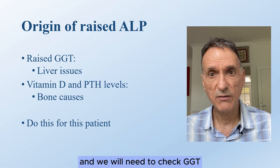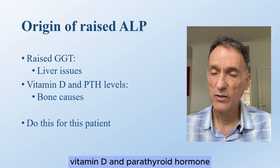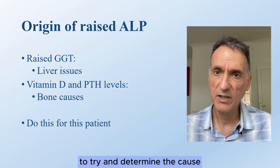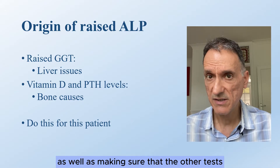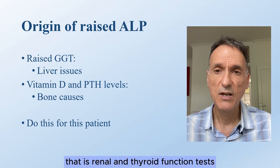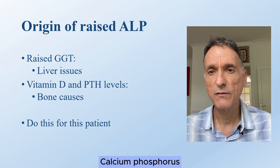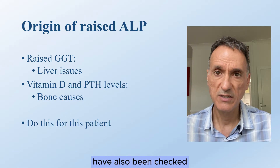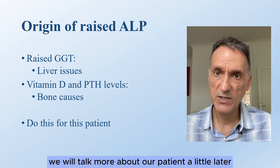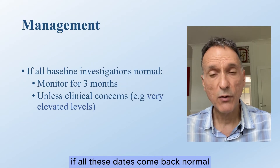For this patient, we need to repeat the alkaline phosphatase level and check gamma GT, vitamin D, and parathyroid hormone to determine the cause. We also need to ensure that renal and thyroid function tests, calcium, phosphorus, and a full blood count have been checked.